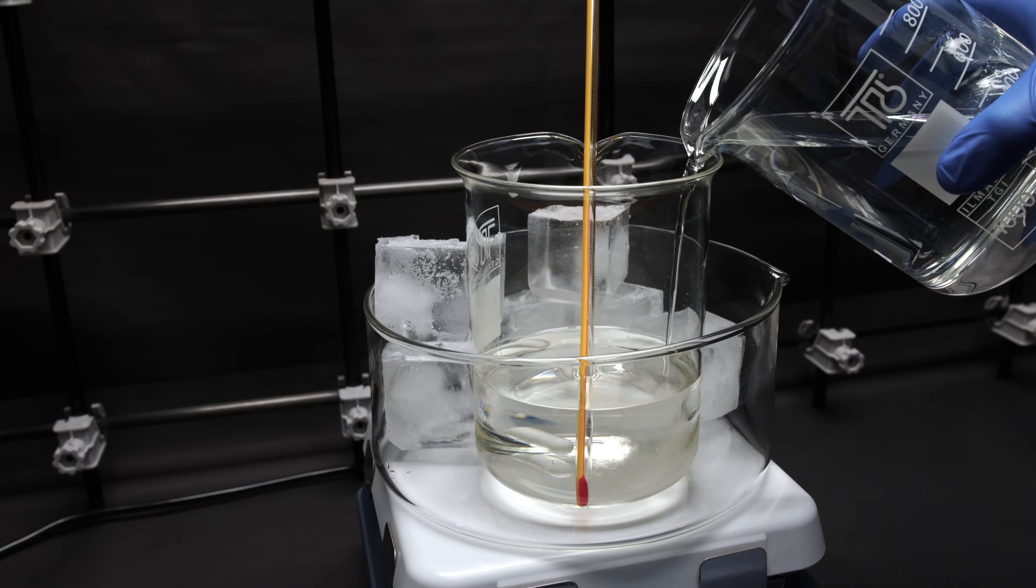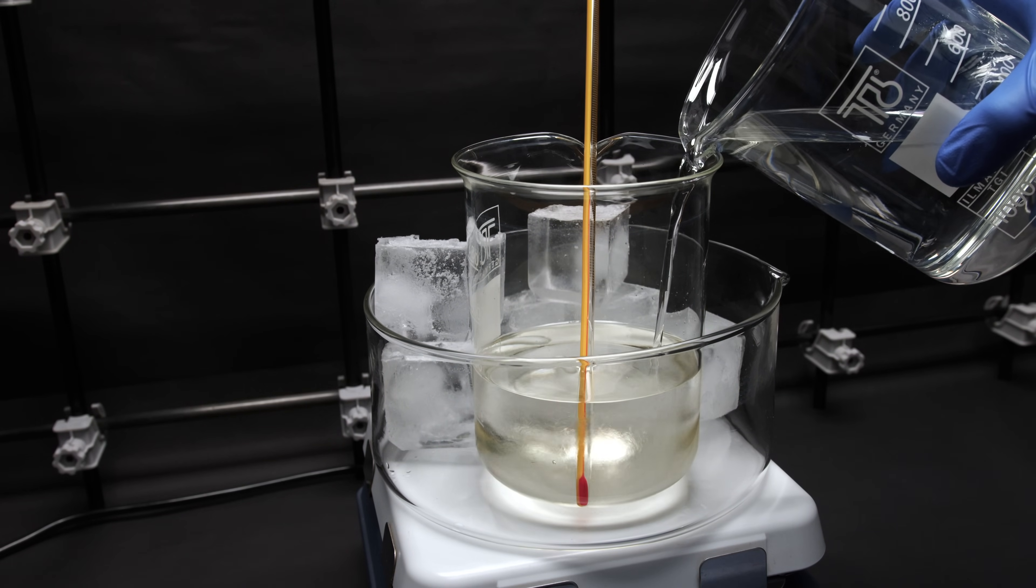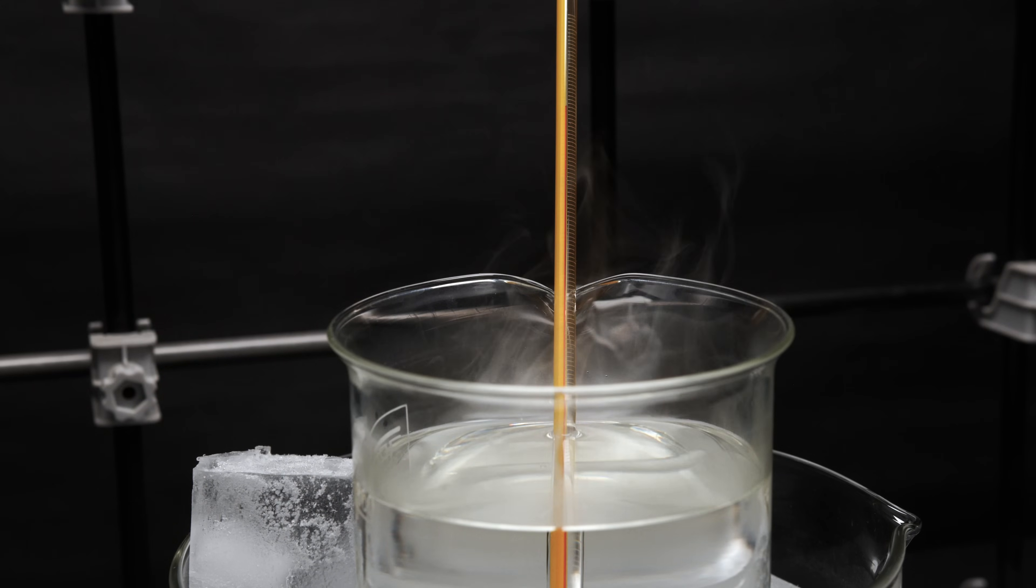When everything is ready, start mixing nitrating acid by adding sulfuric acid to nitric acid. This process will produce a lot of heat and acid fumes, so be sure to do it in a very ventilated area or in a fume hood with proper PPE.